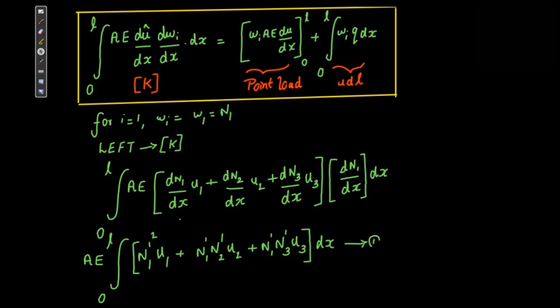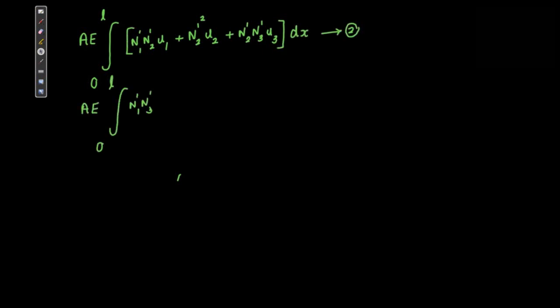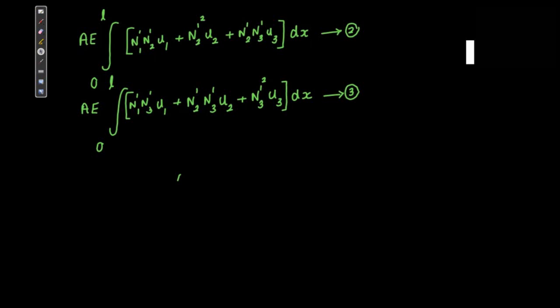Now, if I substitute for i=2 and for i=3, I get two more equations. For i=2, I get a corresponding expression — that is equation number 2. And for i=3, I get another expression — that is equation number 3. So we now have three equations in total.